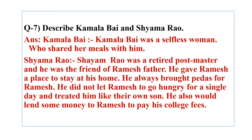Question number seven: Describe Kamalabai and Sham Rao. Kamalabai was a selfless woman who treated Ramesh like her own son and shared her meals with him. Sham Rao was a retired postmaster and a friend of Ramesh's father. He gave Ramesh a place to stay, always brought pedas for him, never let him go hungry for a single day, and would lend money from his meager pension to pay Ramesh's college fees.